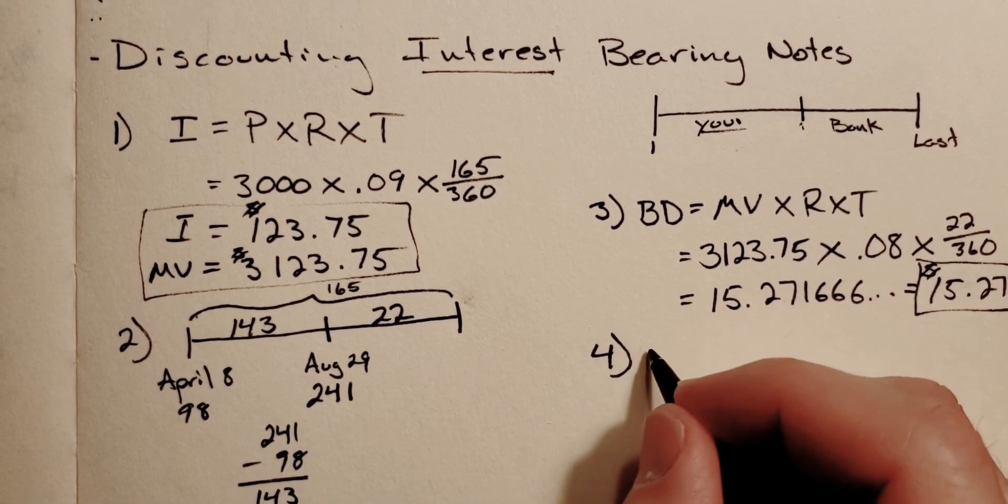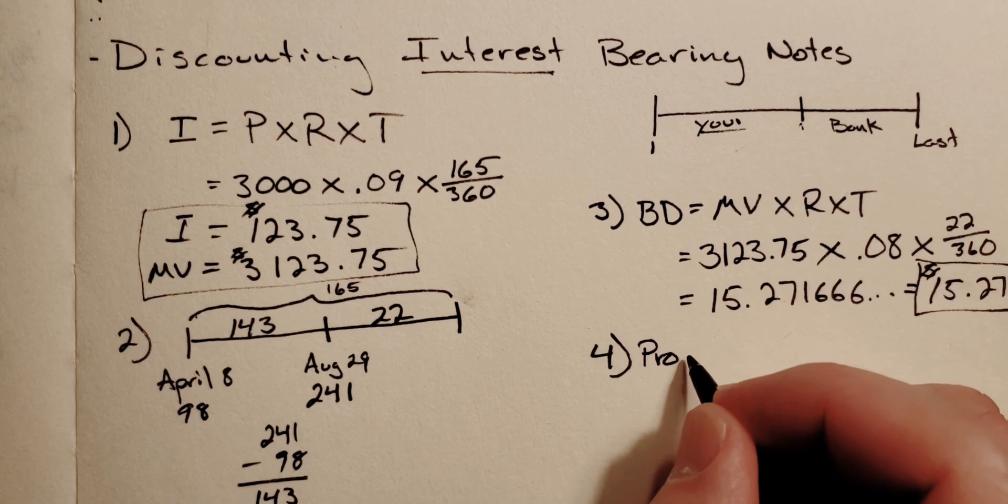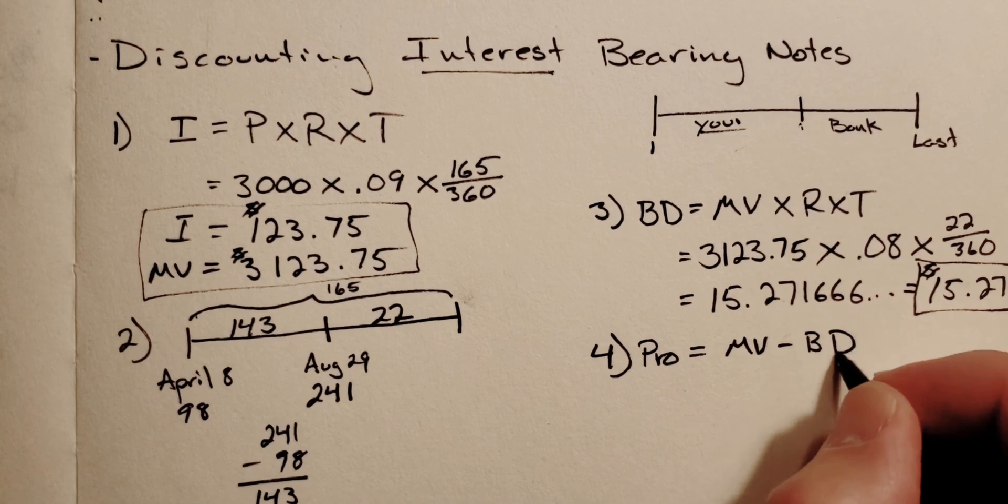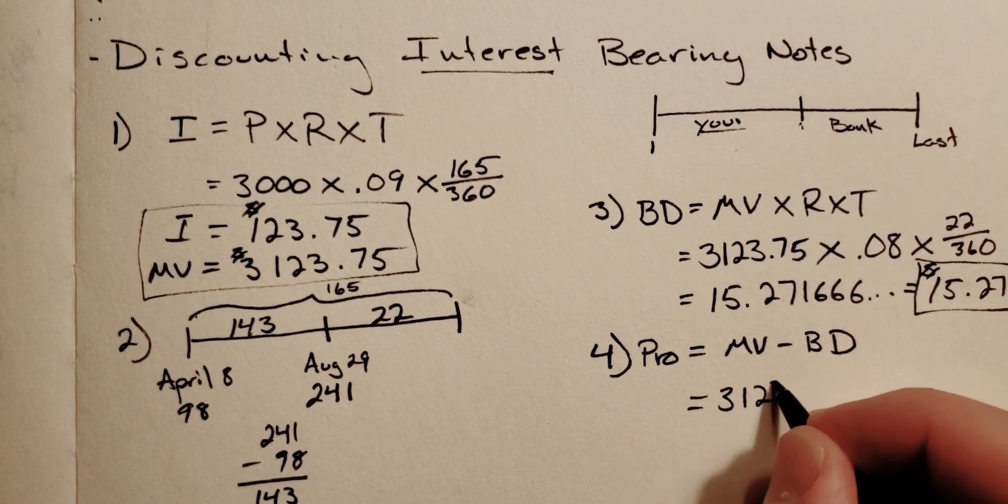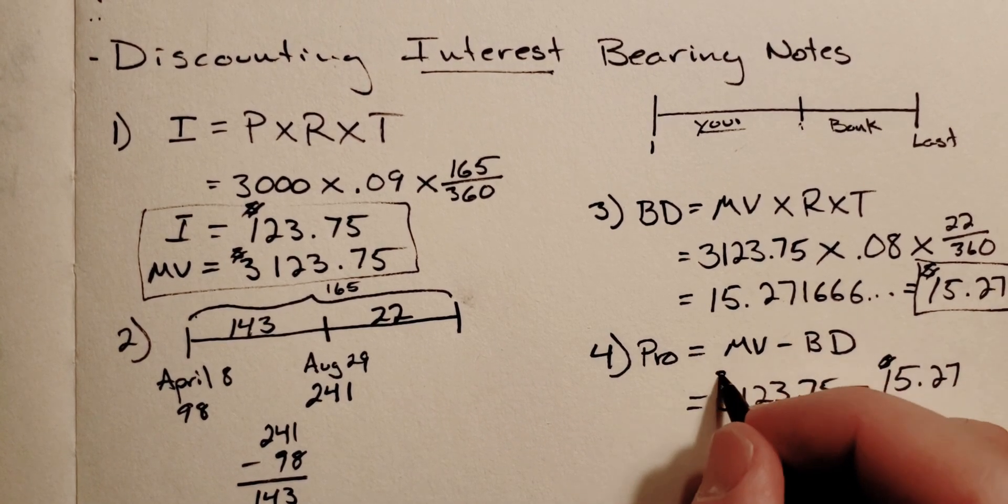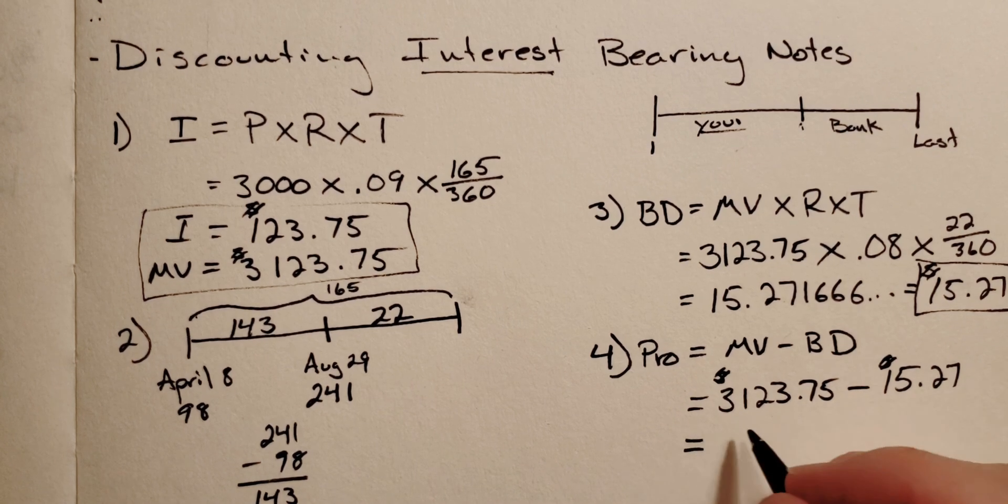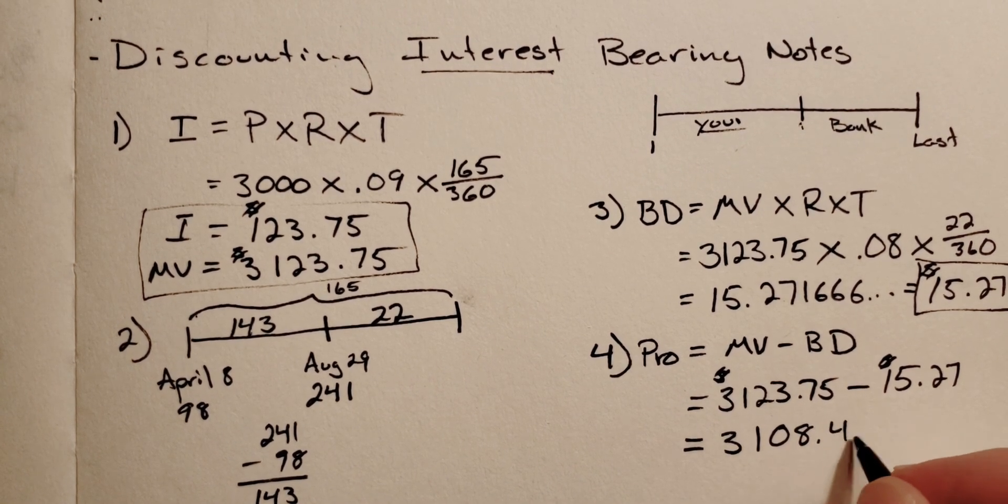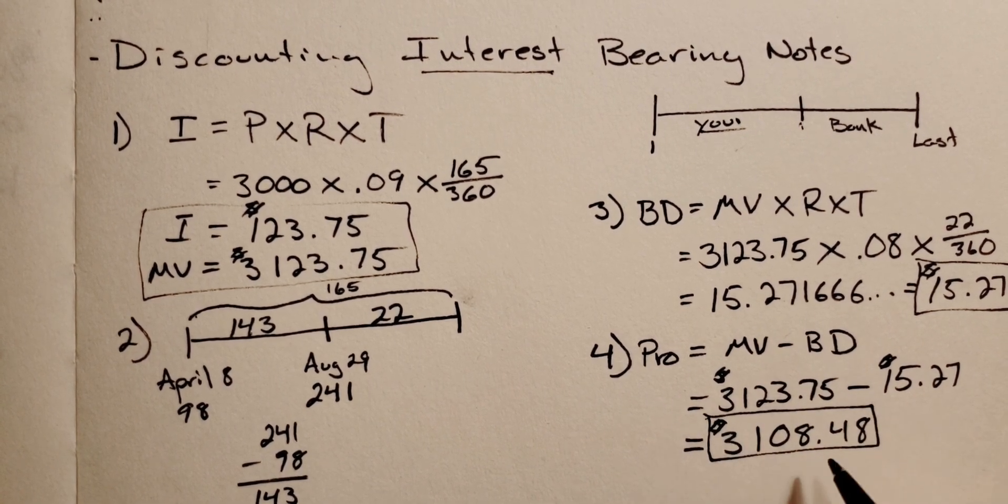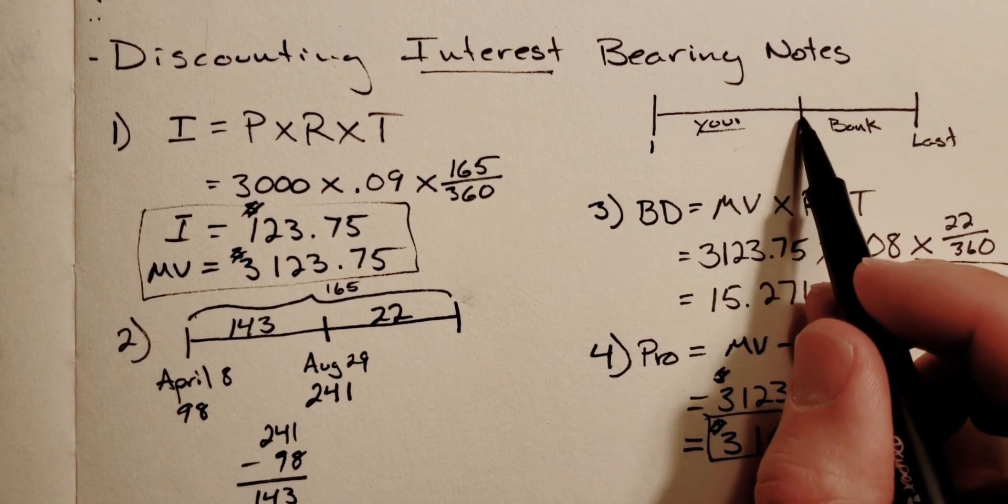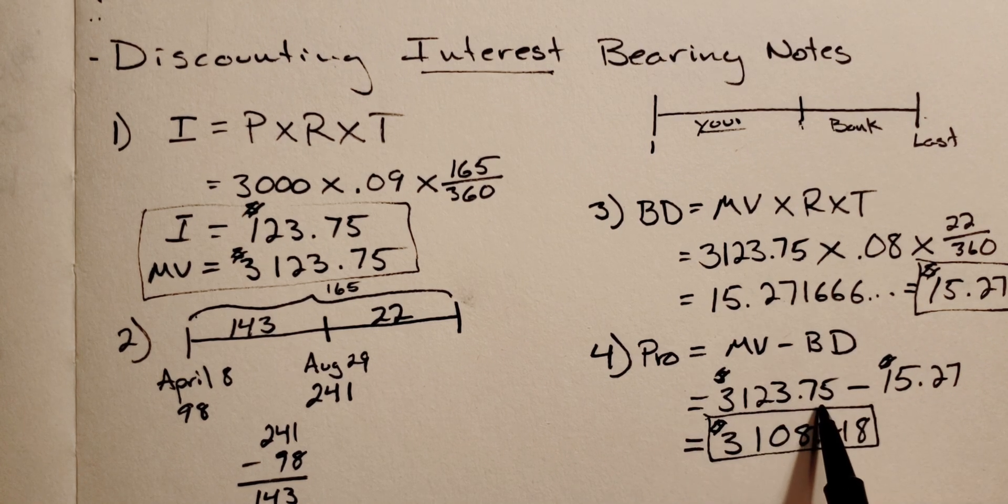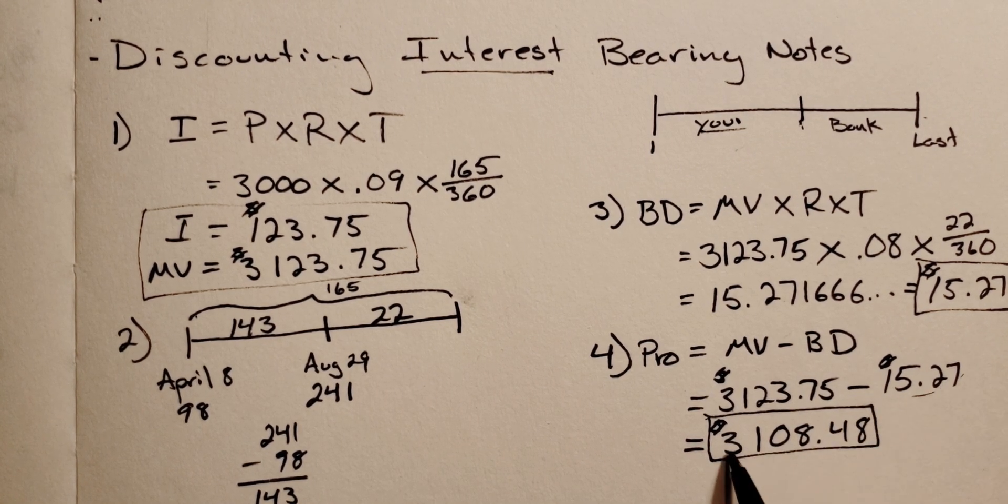So step number four then is the proceeds. And proceeds is equal to maturity value minus bank discount, which equals $3,123.75 minus $15.27, which equals $3,108.48. And that's how much you will get or the company will get if they cash in their promissory note early. They won't get the full amount which would be $3,123.75. The bank's going to take a chunk of that, so they get less.